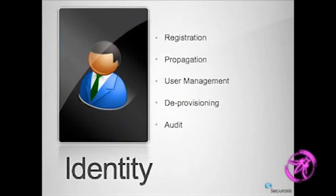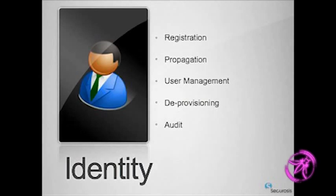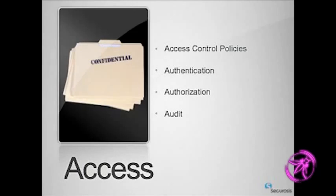Identity and authorization: there will be some good presentations on this during the course of this week. For identity, the things you're worried about are registering users both internal and external, propagation of those users — especially if you're using a cloud service across multiple cloud boundaries. For example, Rackspace or Amazon will have different deployment zones — one in the east, one in the west, one in Europe — and if you want identity to span across those regional boundaries, that's up to you. User management, deprovisioning users, and auditing account creation activity are all important.